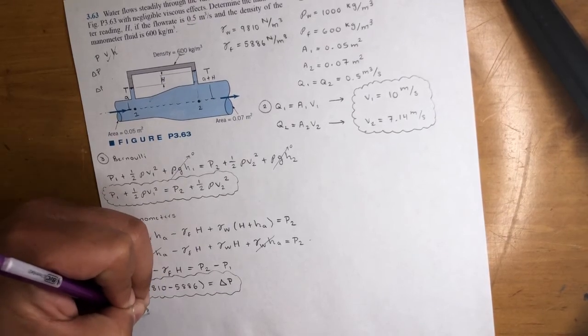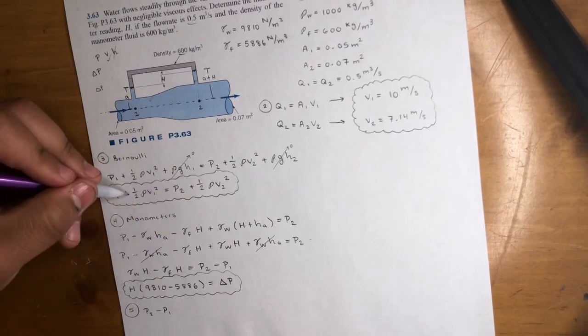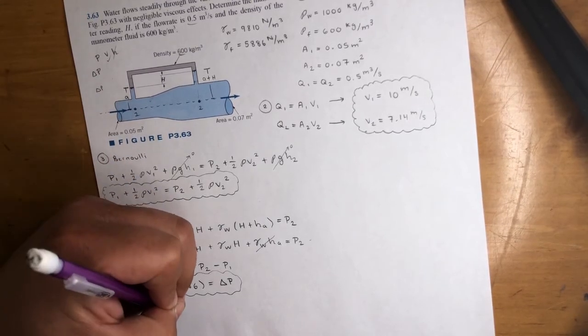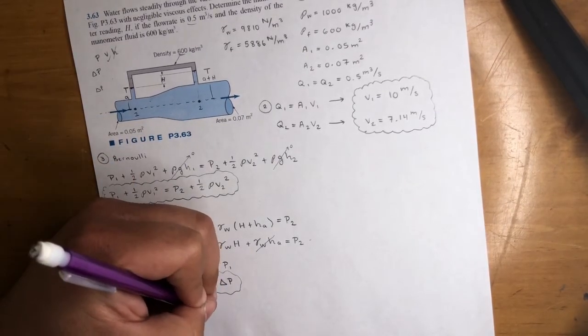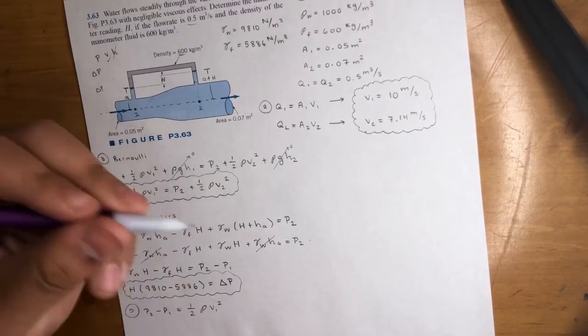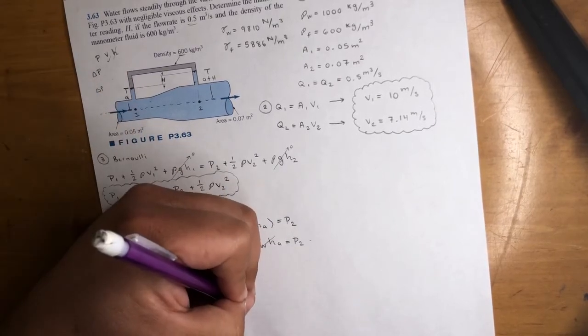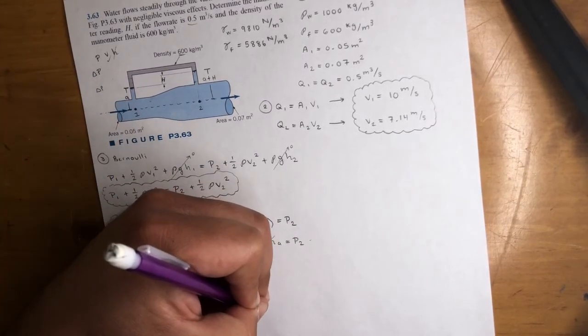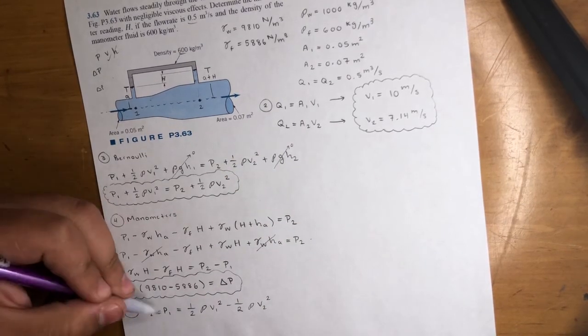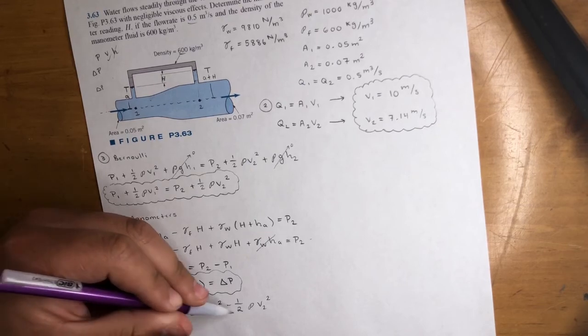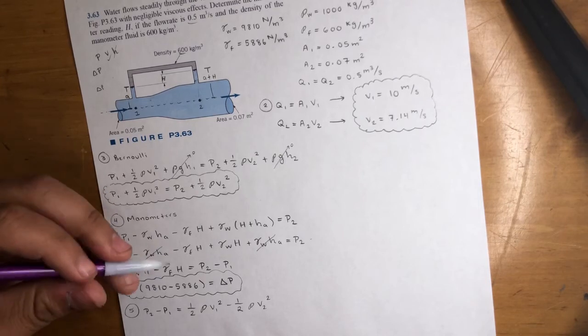So now step five, that is P2 minus P1 - I move P1 over here. So that means this stays positive - is equal to one half density V1 squared minus one half density V2 squared. In other words, this is just delta P. So now we could set this part of the equation equal to this. Does that make sense? Alright. So let's go ahead and do that. That means H times - where's my calculator? Hold on. We'll be right back.